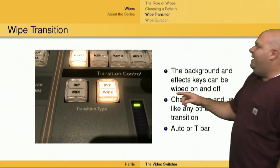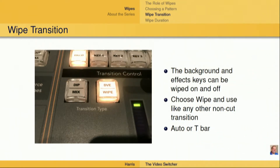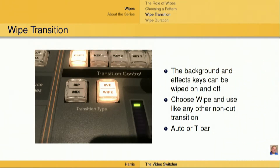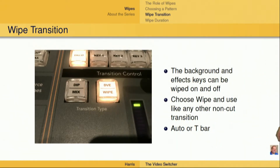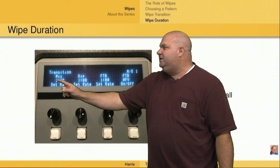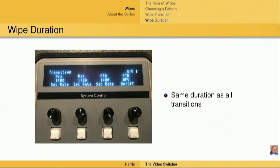When choosing the Wipe transition, we need to choose the Wipe button in the transition type. Note also that the key buttons can be pressed as far as the layer chooser, and we do have the ability to wipe FX keys on and off. The Wipe will work just like any other non-cut transition. We can use the Auto button, or we can use the Fader or T-bar to execute the Wipe. The duration of the Wipe is going to be the same as the Mix duration, so we want to make sure that we have that selected before executing the Wipe.